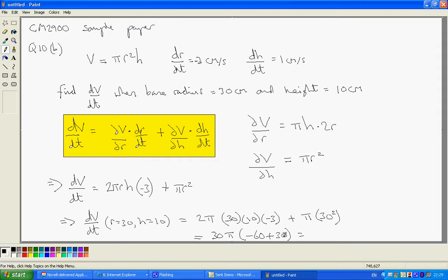Minus 60 plus 30 is minus 30 times 30 is minus 900 times pi. So minus 900 pi cm³ per second.